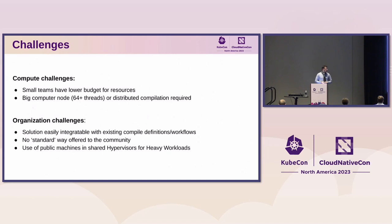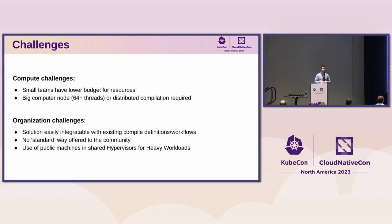Another issue is that a user who wants to compile their workload will just use a public machine that happens to have more resources than what they have. But this public machine is also utilized by other users doing different things. When you run a compilation job, you starve everybody of CPU time, and this is not good for the community — you will have angry users. So how can we help solve this?